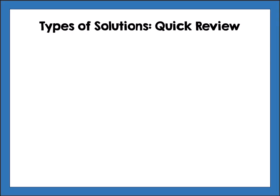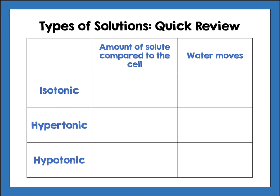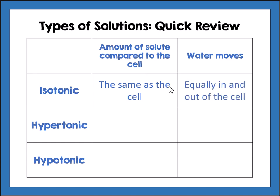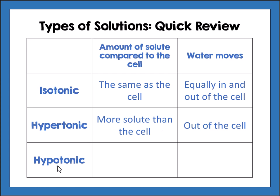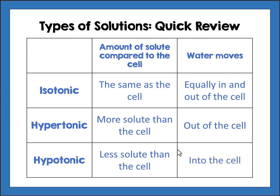Quick review of the three solution types: isotonic — iso meaning equal — solute is the same inside and outside, so water moves equally in and out. Hypertonic — hyper meaning more than — outside has higher solute concentration, drawing water out of the cell. Hypotonic — hypo meaning low — solute is lower outside than inside, so water is drawn into the cell.